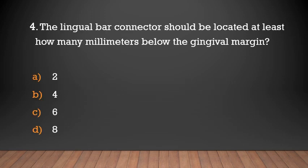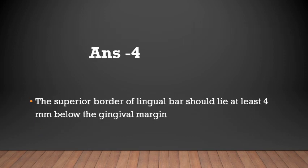The lingual bar connector should be located at least how many millimeters below the gingival margin? The answer is four. The superior border of the lingual bar should lie at least 4 mm below the gingival margin.